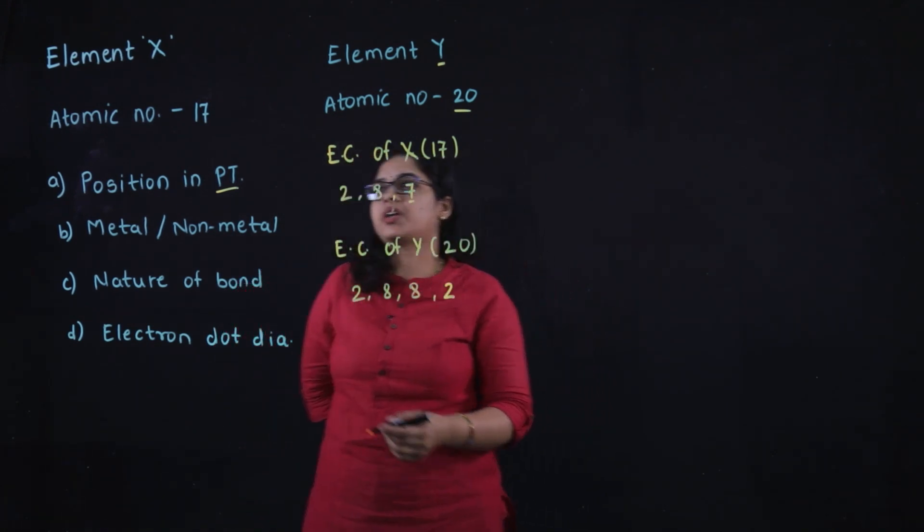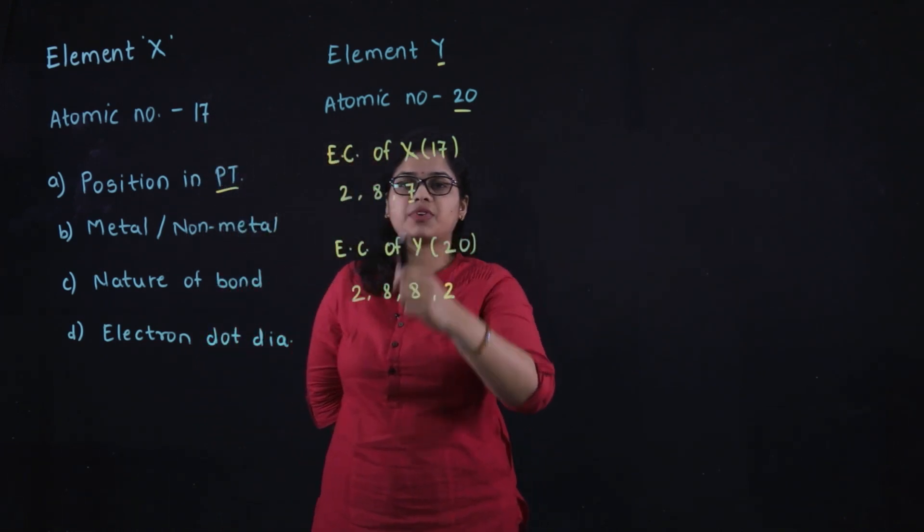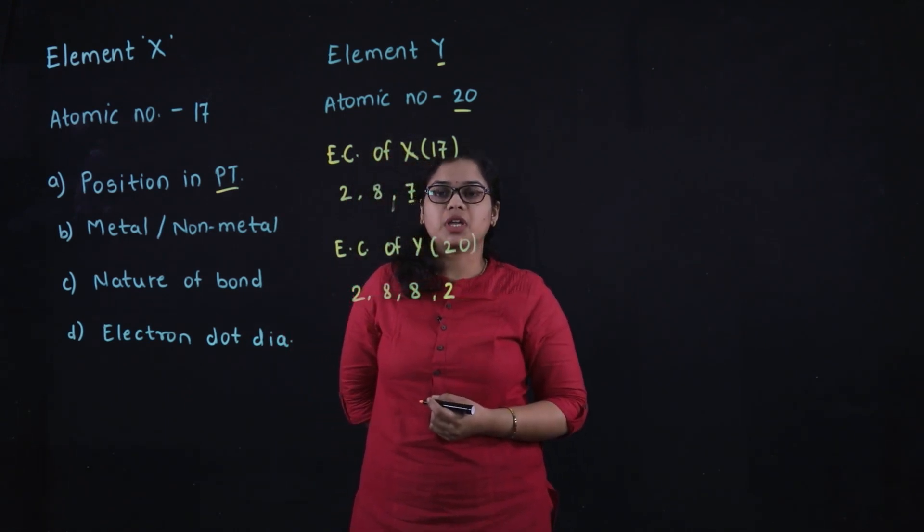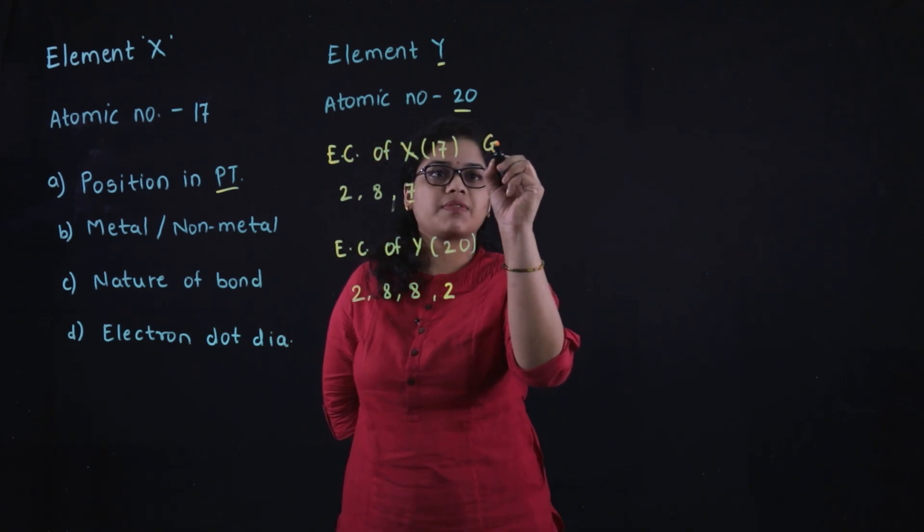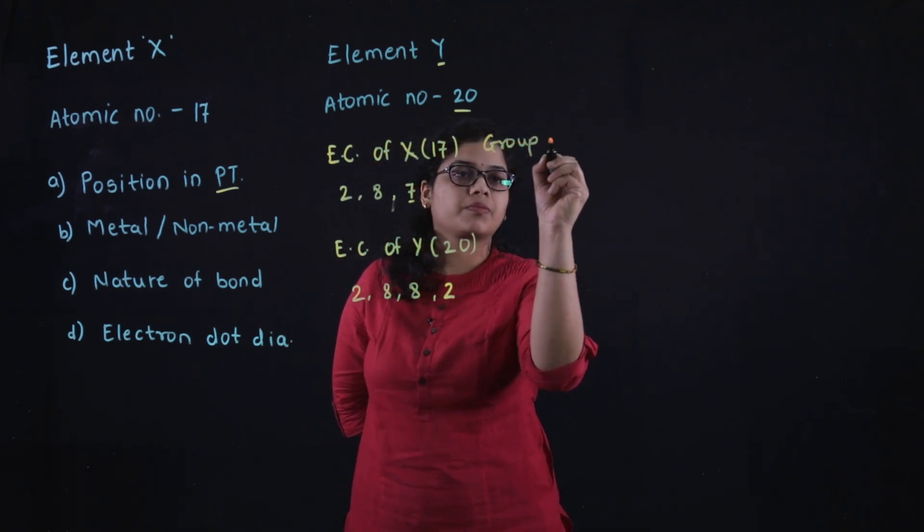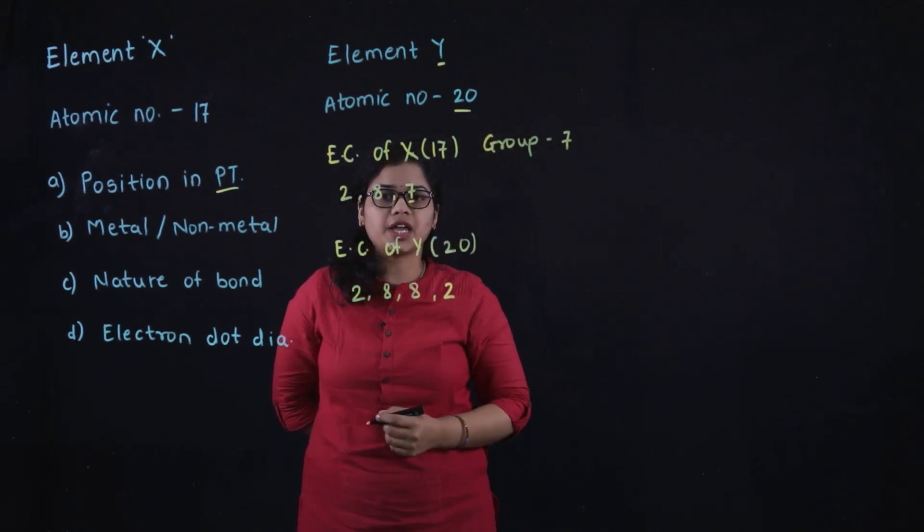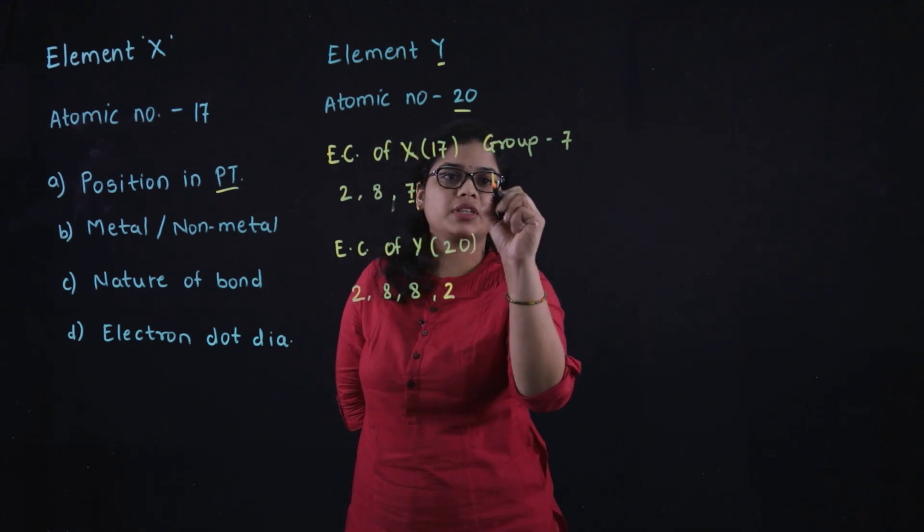Now we have to determine the position of element X in the periodic table. From the electronic configuration, we know that the valence electrons give us the group number, so element X belongs to group 7. The number of shells gives us the period number, so element X belongs to period 3.